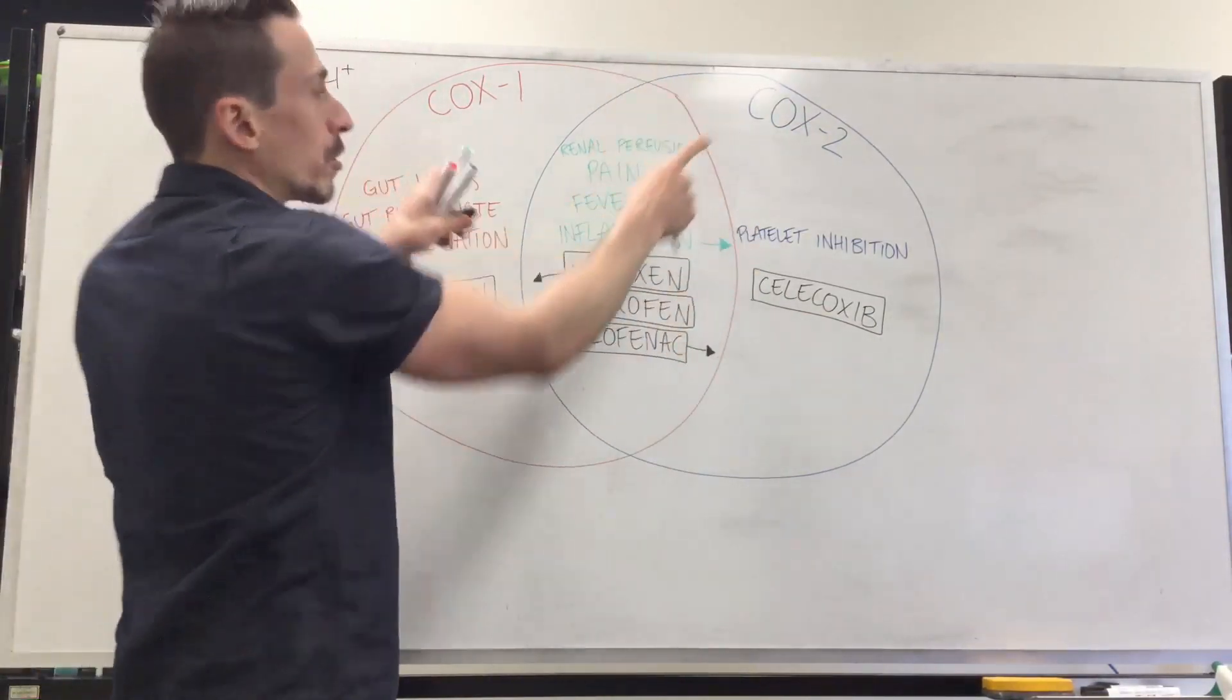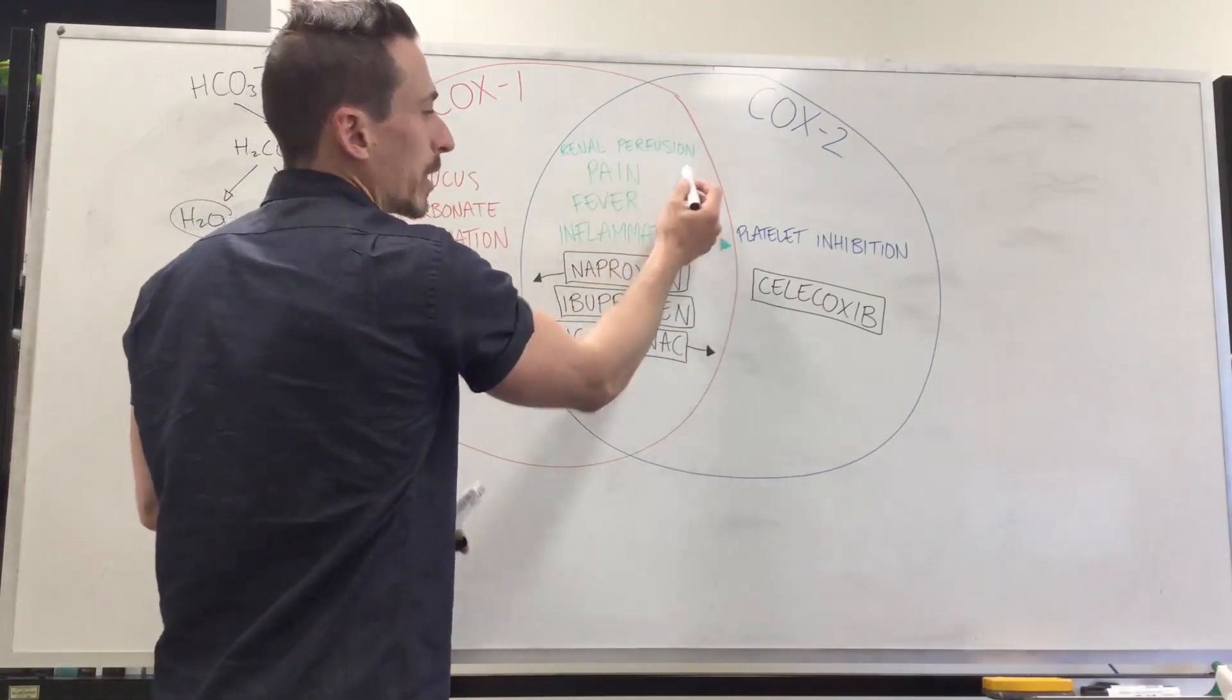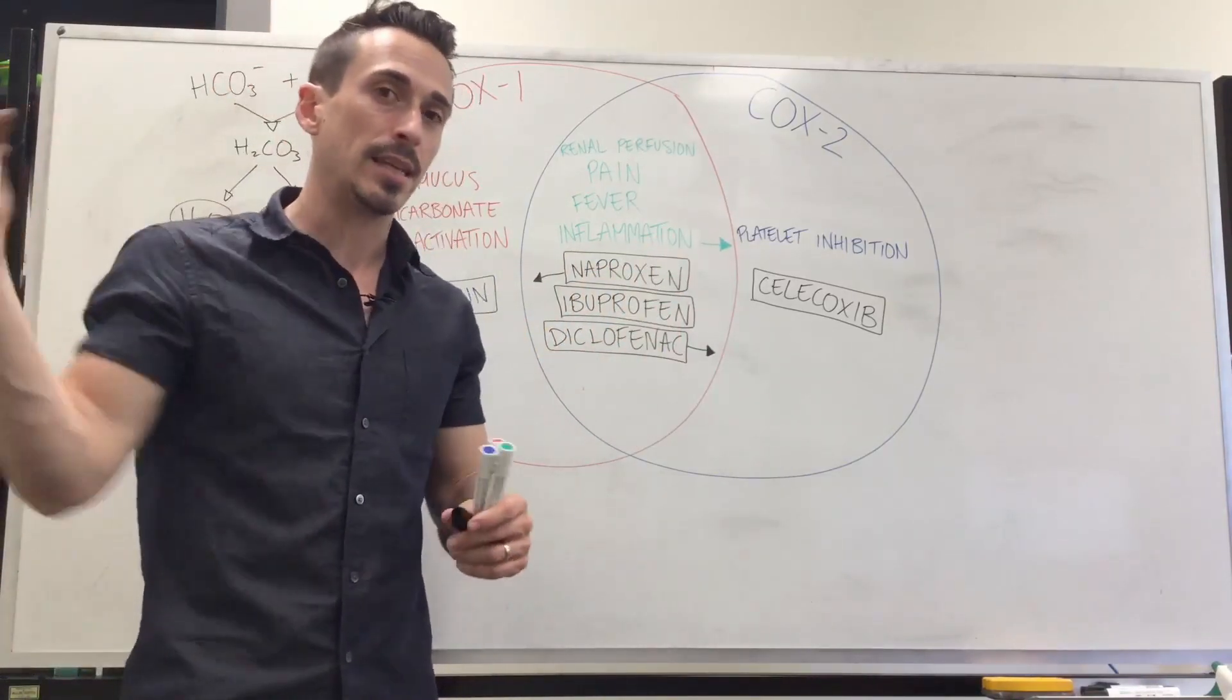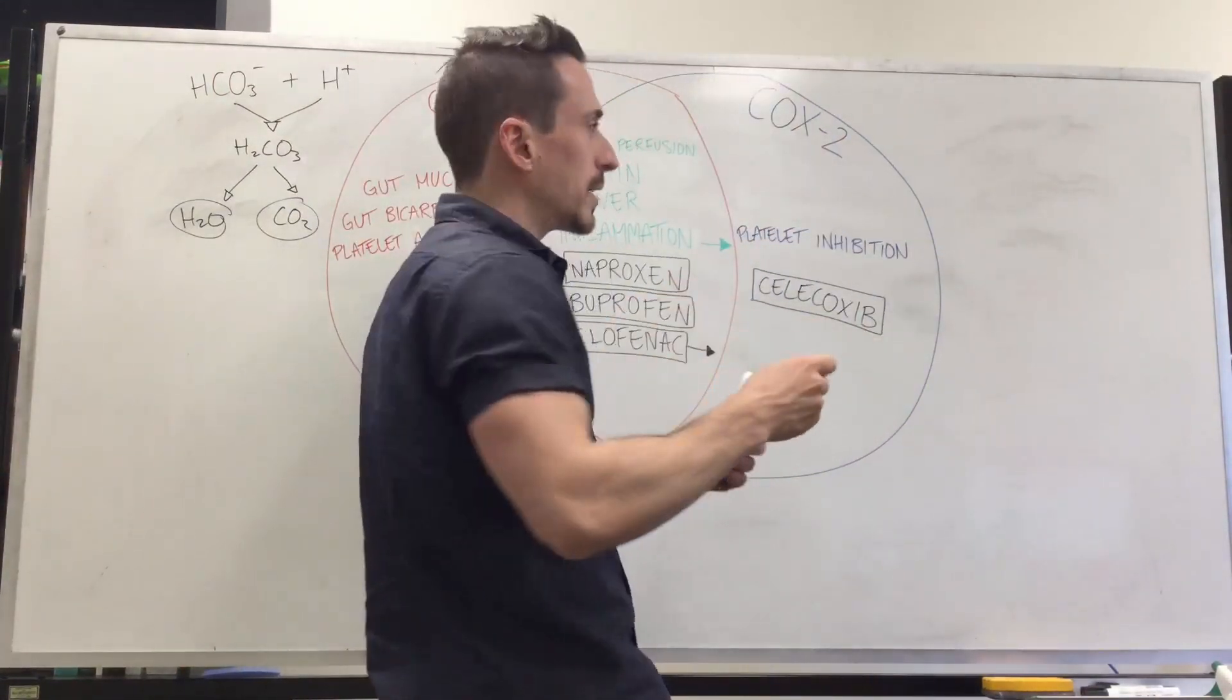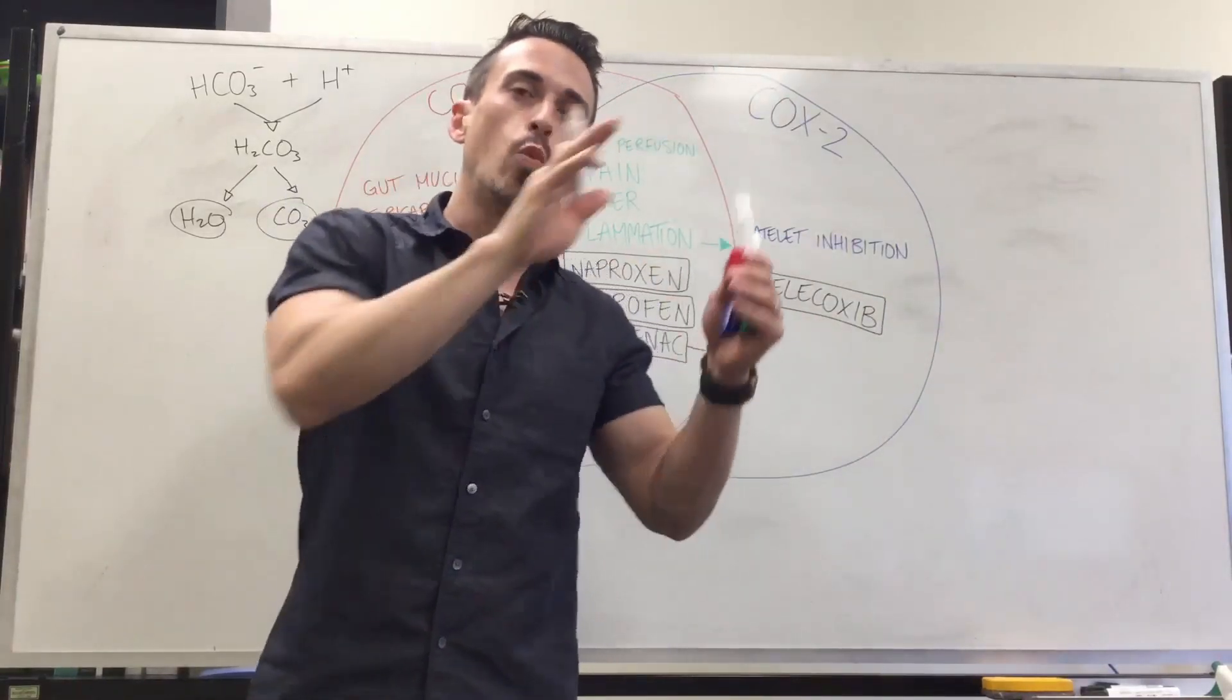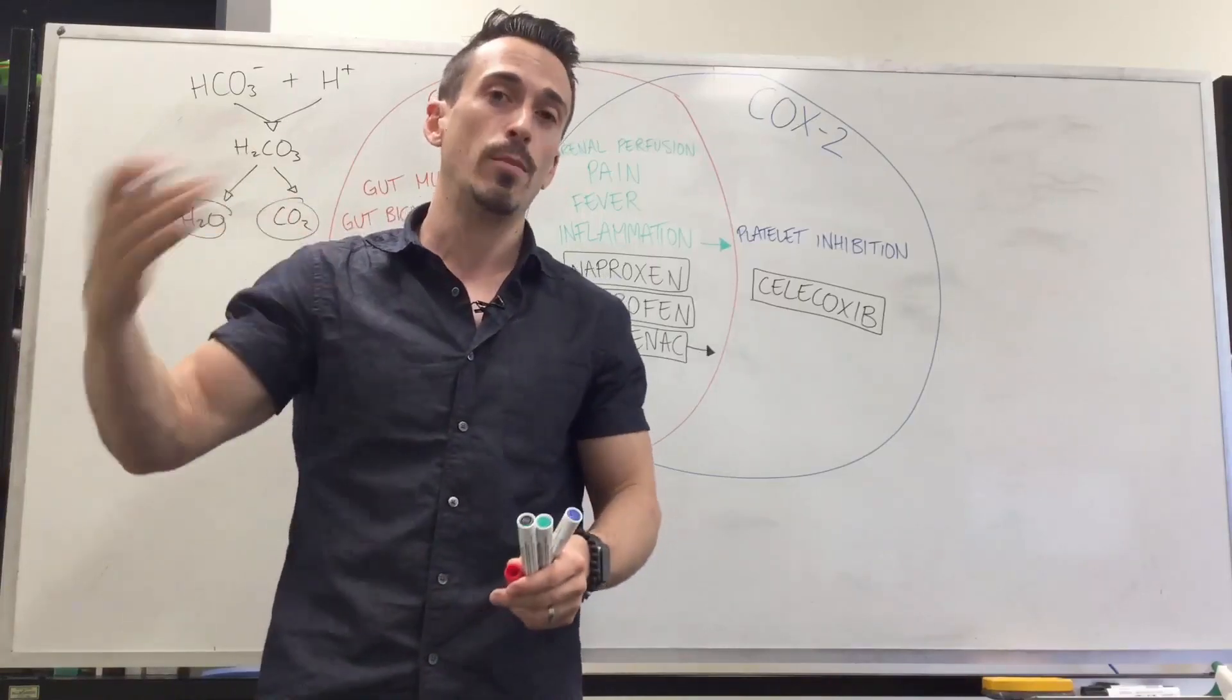So what both COX-1 and COX-2 are really good at doing is producing prostaglandins that play a role in renal perfusion. Renal is your kidneys. Perfusion is the blood getting to the kidneys that can participate in gas exchange and also, when it comes to the kidneys, be filtered. So for example, you all know that when you look into your kidneys, each kidney has one million units called nephrons. Nephrons are what filter our blood.